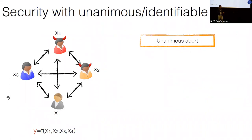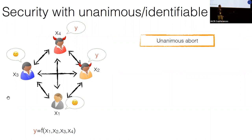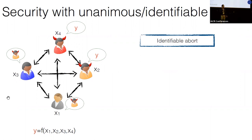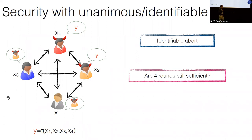With unanimous abort, honest parties might abort or might get the output of the computation, but if they abort, all honest parties agree that it is an abort. With identifiable abort instead, when honest parties abort, they also identify one of the corrupted parties. The question is whether we can construct a secure protocol achieving identifiable abort in four rounds, which is the optimal, the best you can do.